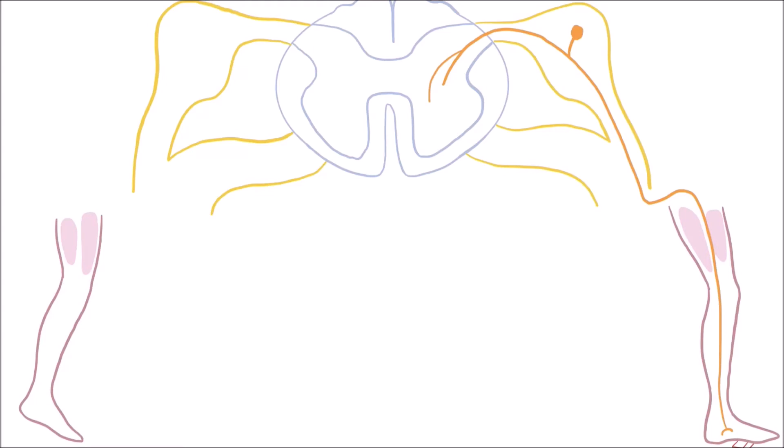In the spinal cord, the sensory neuron synapses with the interneurons. One of these interneurons excites an alpha motor neuron going to the flexor muscles in the leg, which causes these muscles to contract.